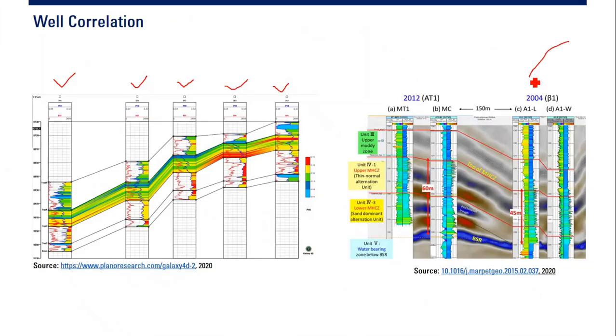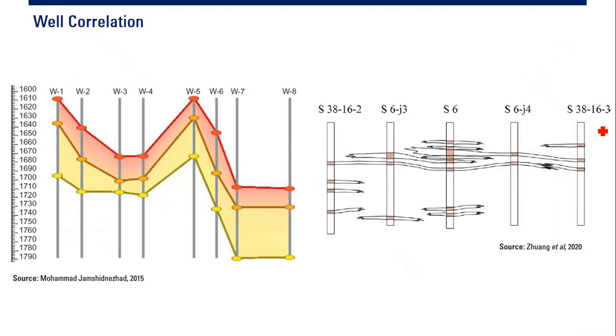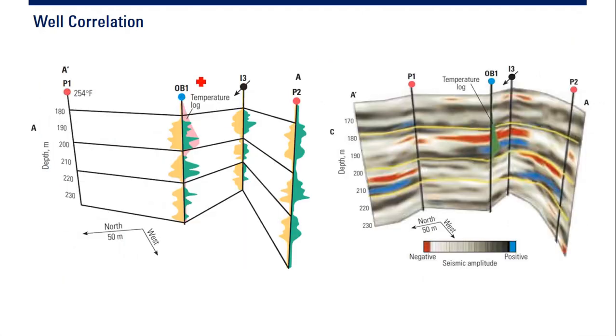Or you can also create well correlation with seismic. So we have log data. And at the background, we have seismic picture. Another type of well correlation. Another well correlation. This one and this one. This is the conceptual picture with log. And this is the well correlation with seismic. So it's very good if you can combine the seismic and the log to create well correlation.